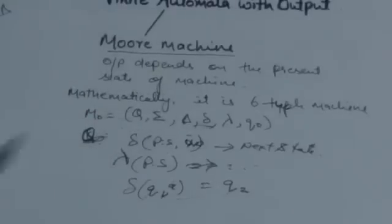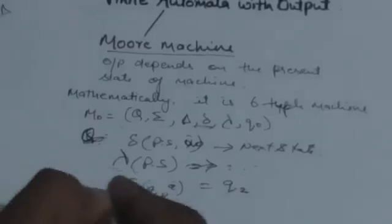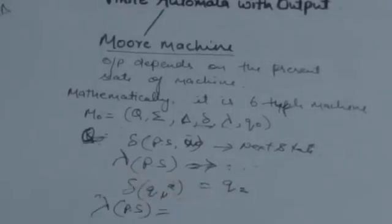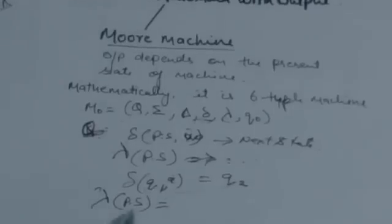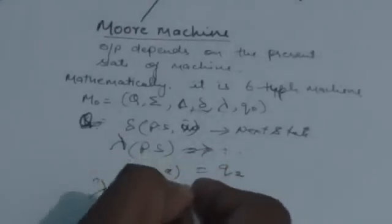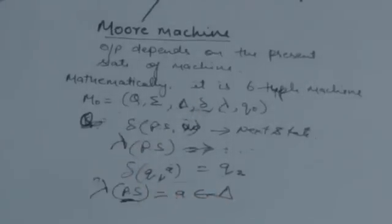After delta, λ (lambda) is the output function. It gives the output associated with each state. It takes only one argument, that is the present state, and gives the output associated with that state. Whatever output it gives belongs to the finite set of outputs Δ. And q0 is the initial state of the Moore machine.